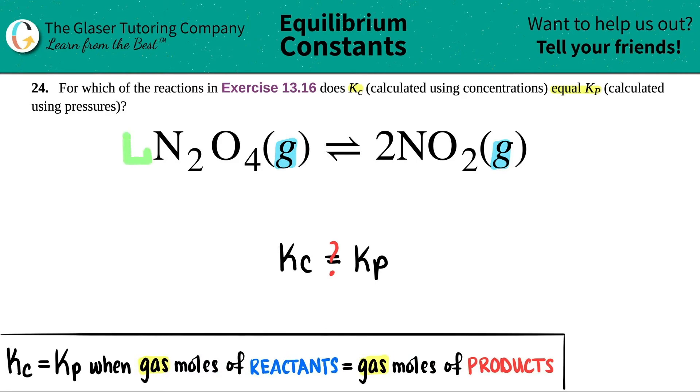That's the coefficients, the big numbers in the front. So for example, there was no number in front of here. So that just means that I had one mole of the N2O4. And since this is the only reactant, I just have one mole of reactant.